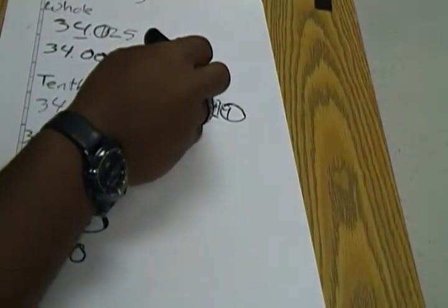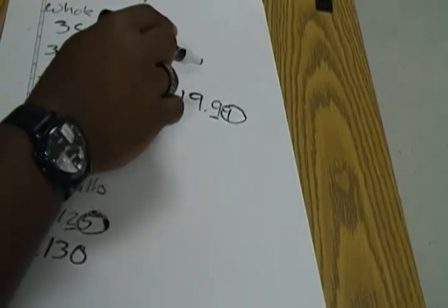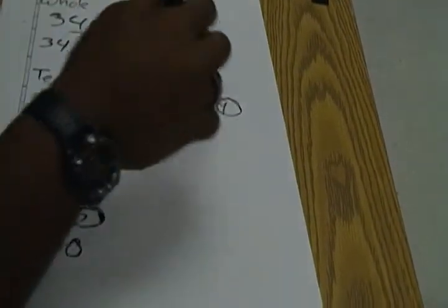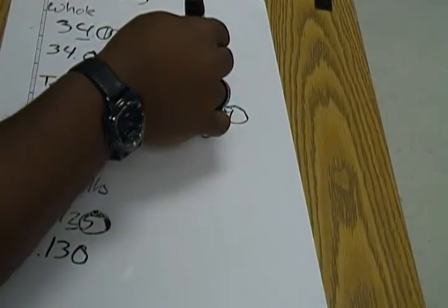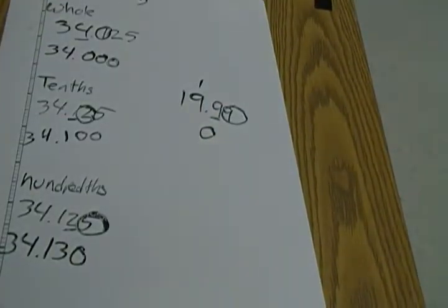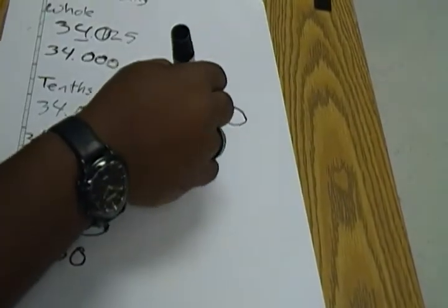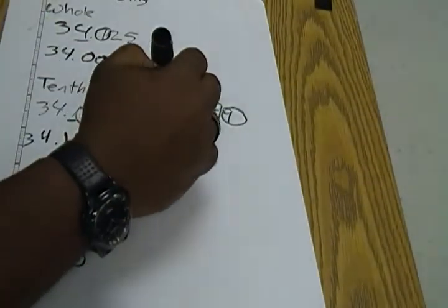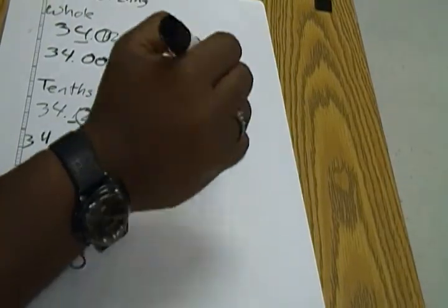This should change to the next number, but the next number is actually ten. We can't put a ten there, so we put a zero and carry the one over. That becomes ten also, so we carry it over one more time. That becomes 20. Don't forget your decimal.